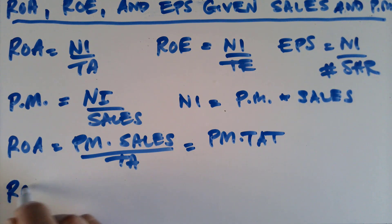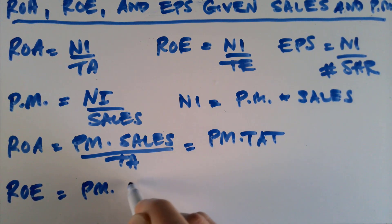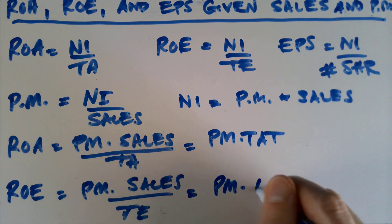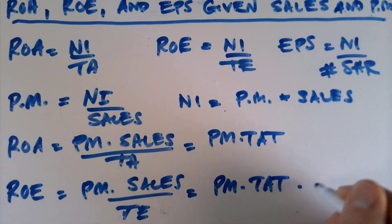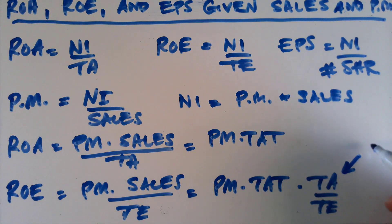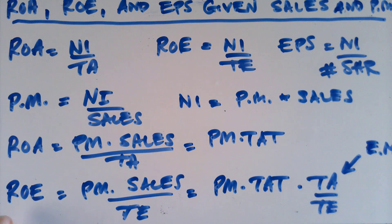We can do something similar with ROE: it's profit margin times sales divided by total equity. And we can take it further — profit margin times total asset turnover times TA over TE gives us net income over total assets, and then multiplying by total assets divided by total equity gives us net income over total equity, which is our ROE. It turns out this last term has a name: the equity multiplier. And this is the DuPont equation — ROE equals profit margin times total asset turnover times the equity multiplier.